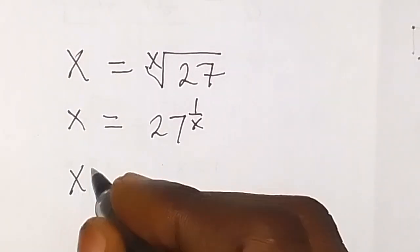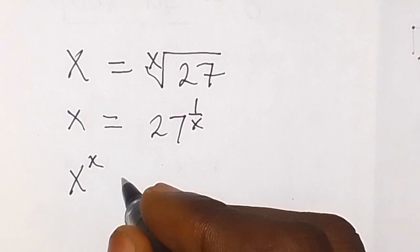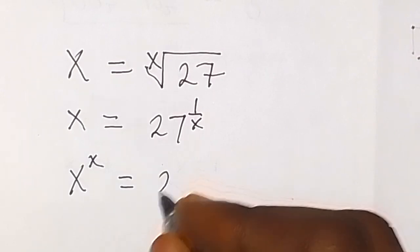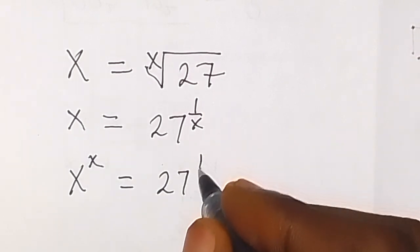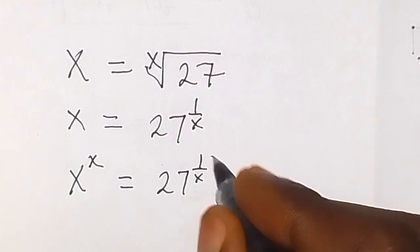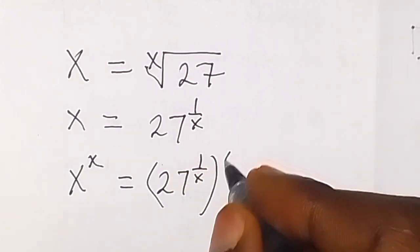So here we now have x raised to power x equals to 27 raised to power 1 over x and also raised to power x.